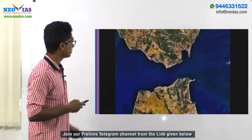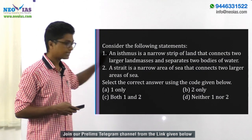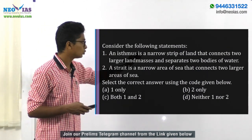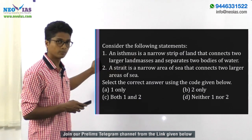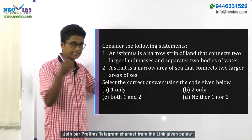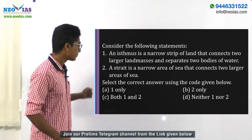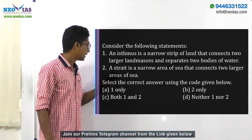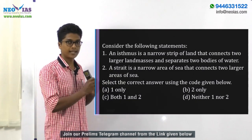Let's go back to the question. The first statement says an isthmus is a narrow strip of land that connects two larger land masses and separates two bodies of water — which is true. It separates two oceans and connects land regions via a narrow strip of land, so the first statement is true.